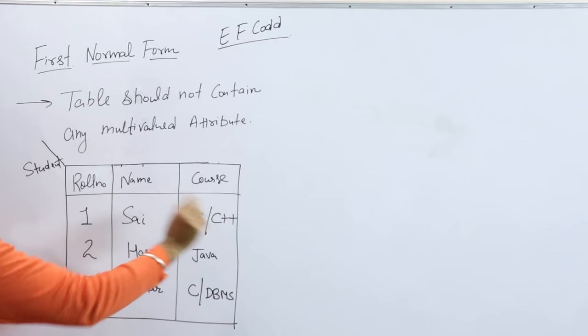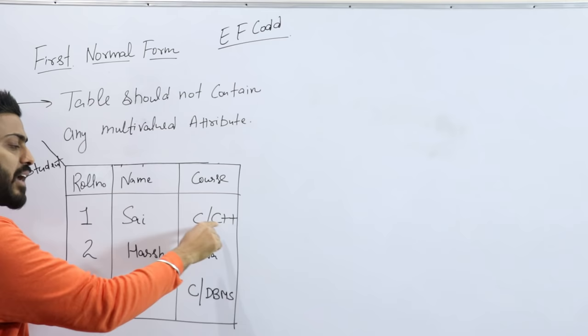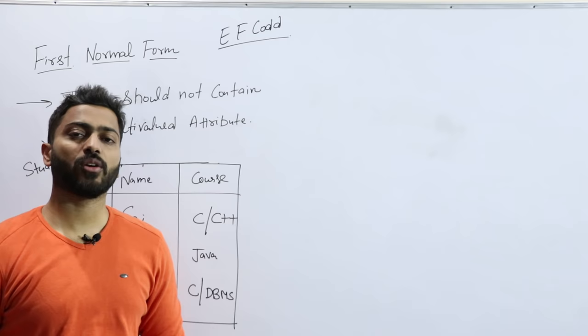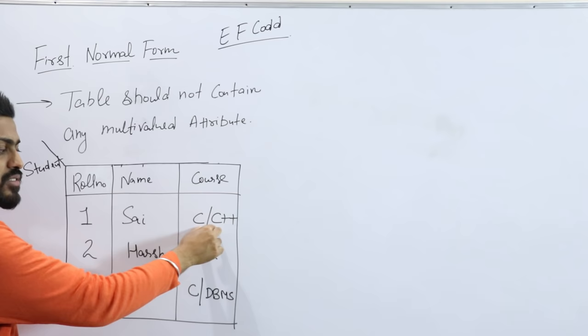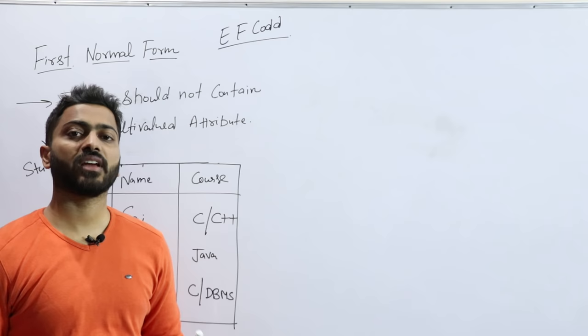That means the student has registered in C and C++ both courses. Yes, it is possible that a student is enrolled in multiple courses, but my question is how to represent it correctly. This representation is wrong. We cannot represent like this because a student may have multiple values - address can have multiple values, phone number can be more than two values.